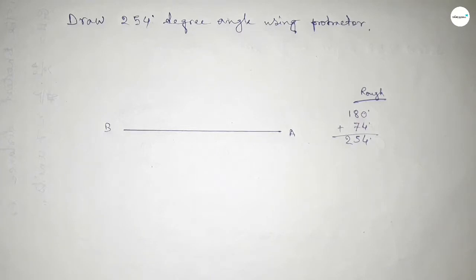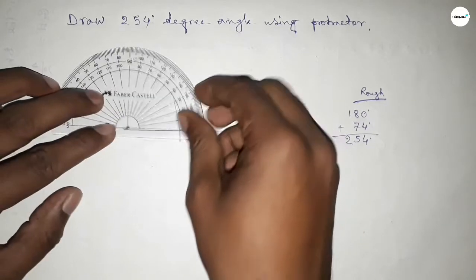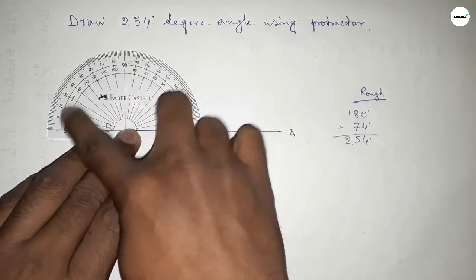First, counting 180 degree angle on the point B. So putting the protractor on the point B and counting angle, so this is 180 degree.